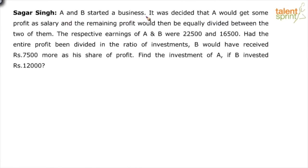A and B started a business. It was decided that A would get some profit as salary and the remaining profit would be equally divided between the two of them. The respective earnings of A and B were 22,500 and 16,500. Had the entire profit been divided in the ratio of investments, B would have received 7,500 more. Find the investment of A if B invested 12,000.